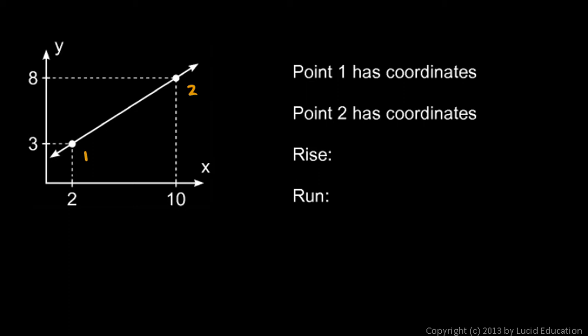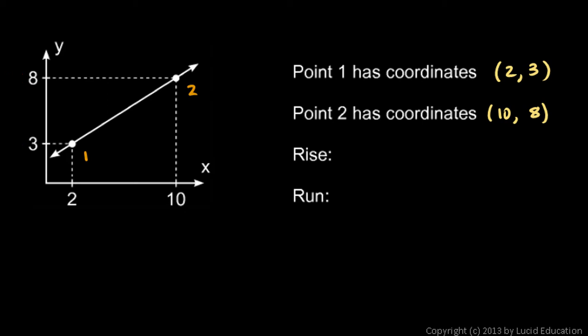Point 1, you can see, has coordinates. And point 2 has coordinates. So the rise — if you go from point 1 to point 2, you go up this far. That interval on the y-axis is the rise. And you can see that that would have a length of 5. You get 5 by looking at these numbers. So the rise there is 8 minus 3.